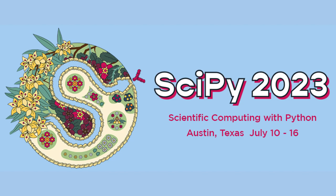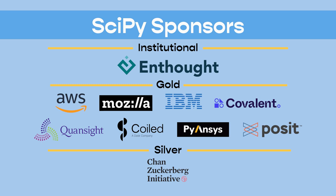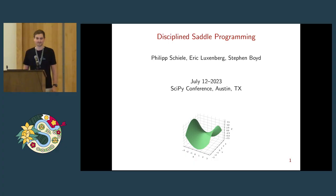And our next speaker this afternoon is Philip Schiller, and his talk is titled Disciplined Saddle Programming. Alright everyone, my name is Philip.